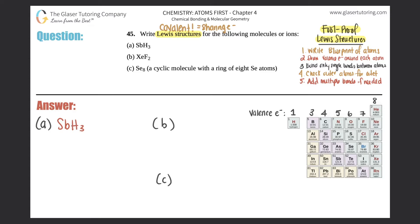First, write a blueprint of the atoms. We need to figure out which atom is the central atom — always the least electronegative, and hydrogen can never be in the center. We only have Sb (antimony) and H (hydrogen). Since hydrogen can never be in the middle, antimony goes in the center surrounded by three hydrogens. That's the blueprint.